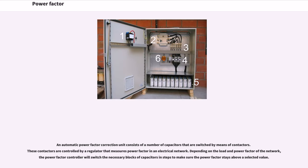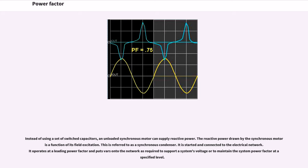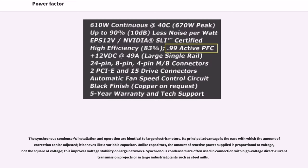An automatic power factor correction unit consists of a number of capacitors that are switched by means of contactors. These contactors are controlled by a regulator that measures power factor in an electrical network. Depending on the load and power factor of the network, the power factor controller will switch the necessary blocks of capacitors in steps to make sure the power factor stays above a selected value. Instead of using a set of switched capacitors, an unloaded synchronous motor can supply reactive power. The reactive power drawn by the synchronous motor is a function of its field excitation. This is referred to as a synchronous condenser.